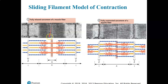The Z-discs move towards the M-line, and you can see that these I-bands get much shorter. Overall, the whole length of the sarcomere and the whole length of the muscle gets shorter because these thin filaments are sliding past the thick filaments, and the whole thing just gets compressed together, even though neither filament changes in length.